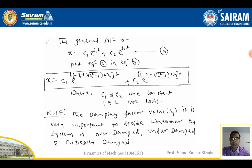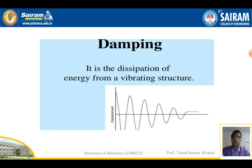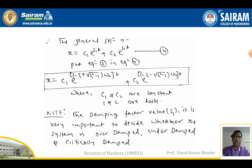The damping factor ζ is very important for deciding the type of system. If ζ > 1, the system is overdamped. If ζ < 1, the system is underdamped. If ζ = 1, the system is critically damped. These are the three classifications used while solving problems.